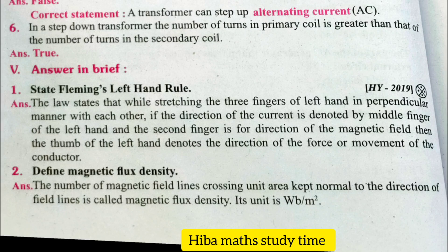Second question: Define magnetic flux density. The number of magnetic field lines crossing unit area kept normal to the direction of the field line is called magnetic flux density. Its unit is Wb per meter square.